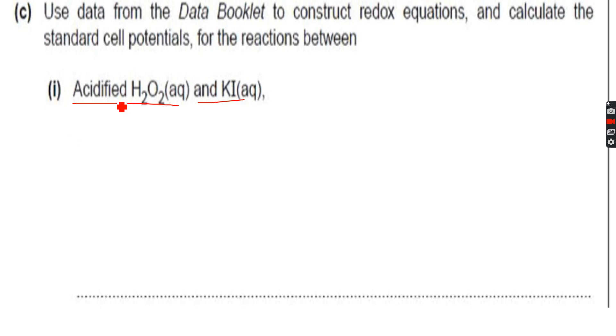For acidified H2O2, when you look at the data booklet, we get H2O2 + 2H+ (the H+ makes it acidified) + 2e- gives 2H2O. The electrode potential for this half cell is +1.77 volts.